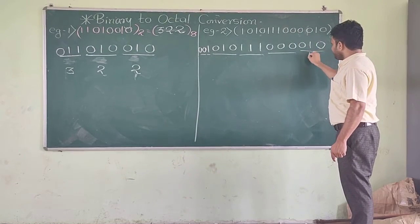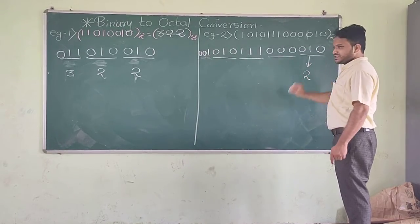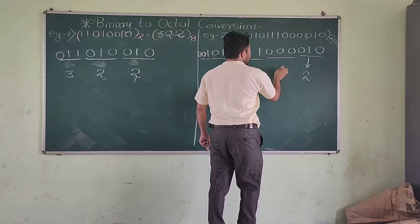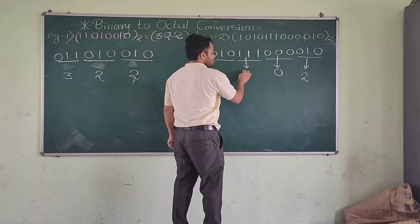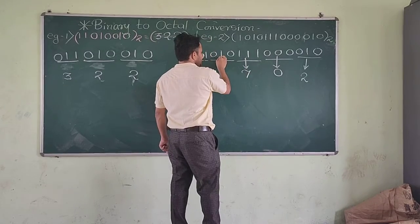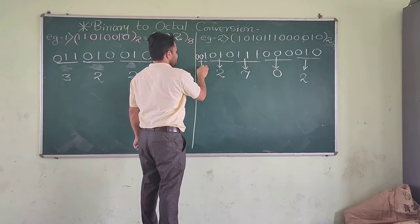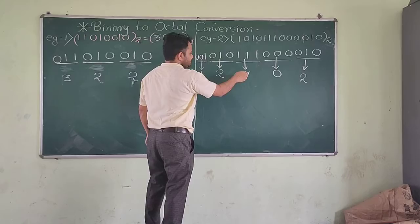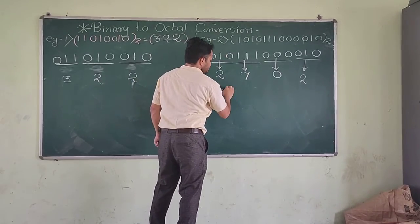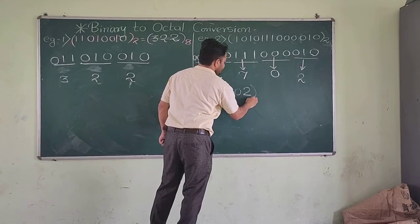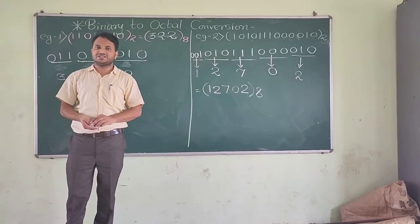Now write down the equivalent octal values for each group. Group 1: 0, 1, 0 is 2. Group 2: 0, 0, 0 is 0. Group 3: 1, 1, 1 is 7. Group 4: 0, 1, 0 is 2. Group 5: 0, 0, 1 is 1. So the answer for this question is 1, 2, 7, 0, 2 in the octal number system. This is the required answer. I hope you will understand. Thank you.